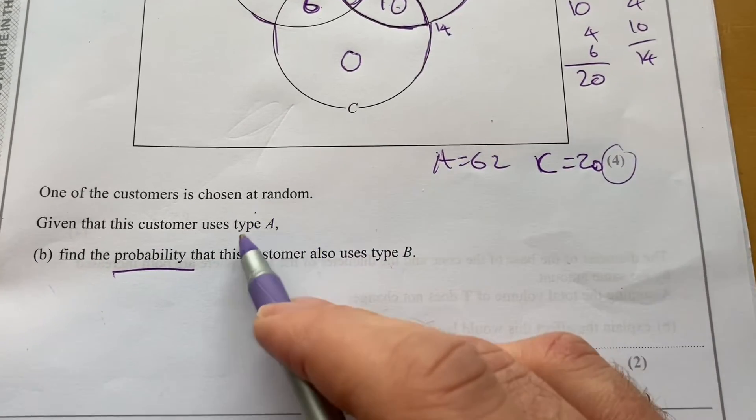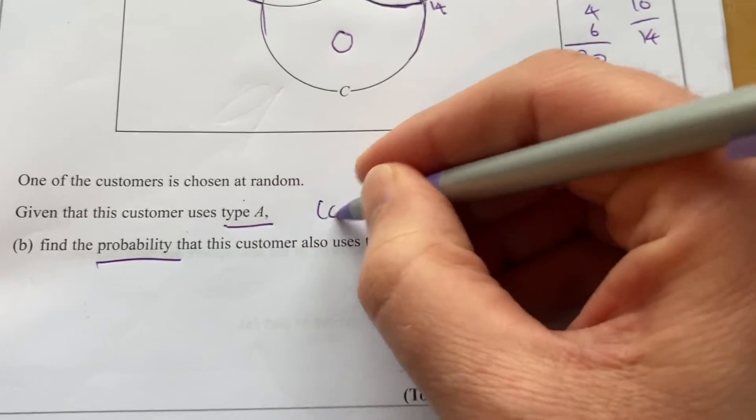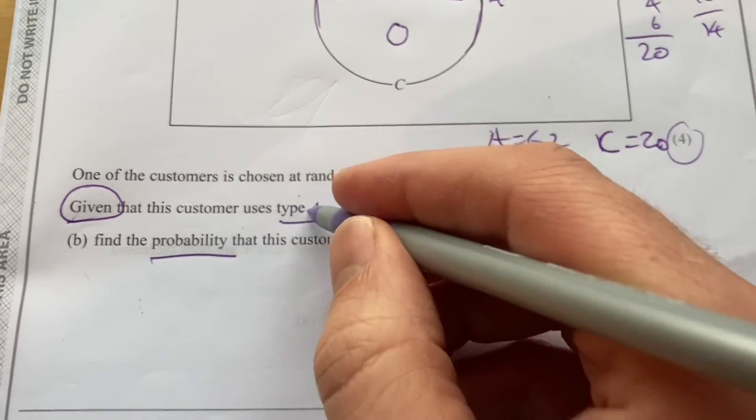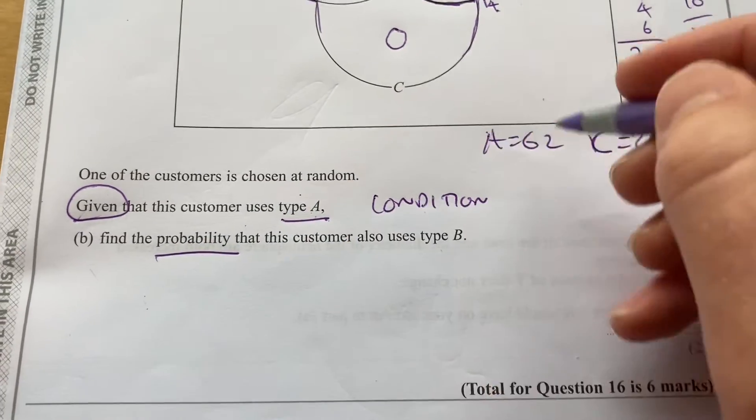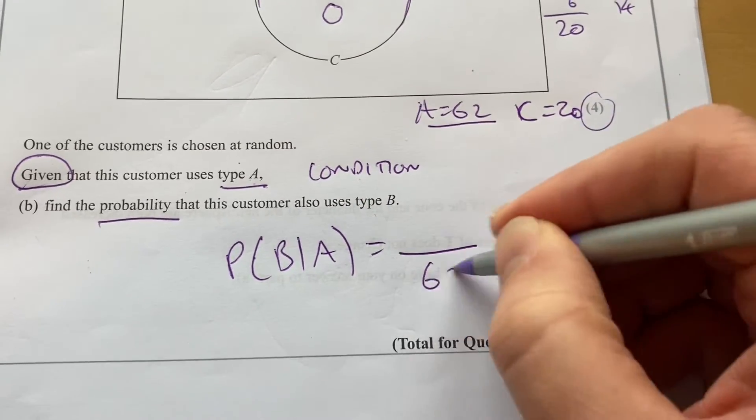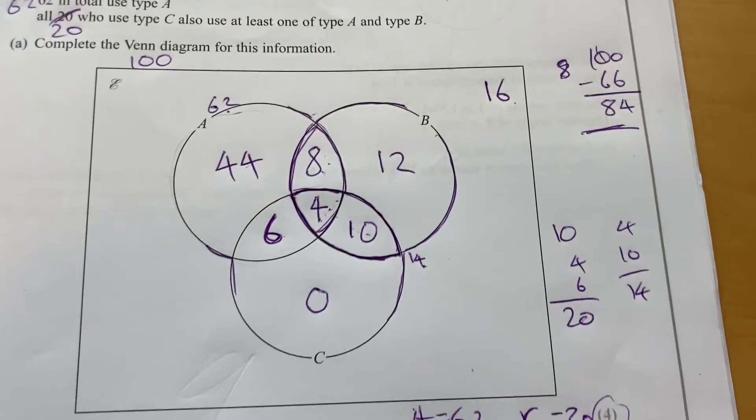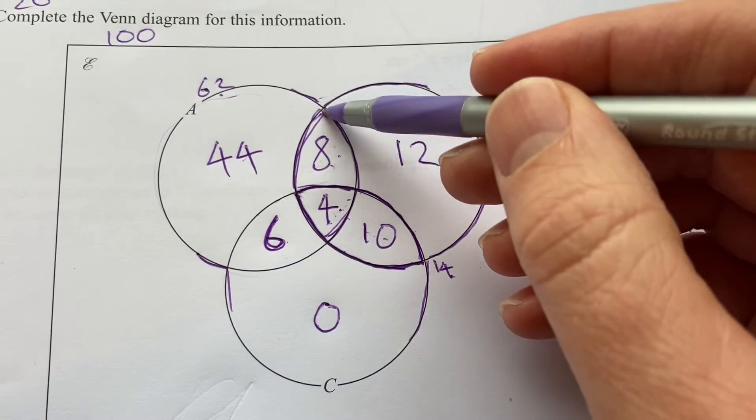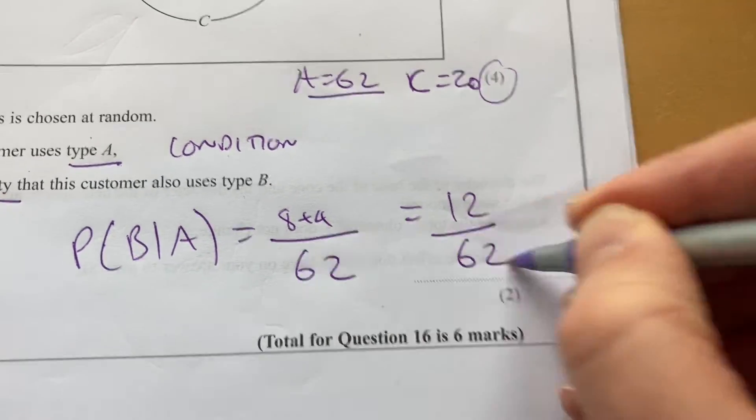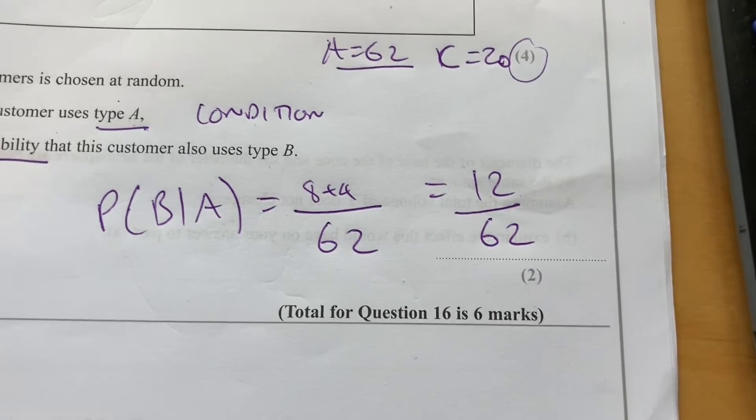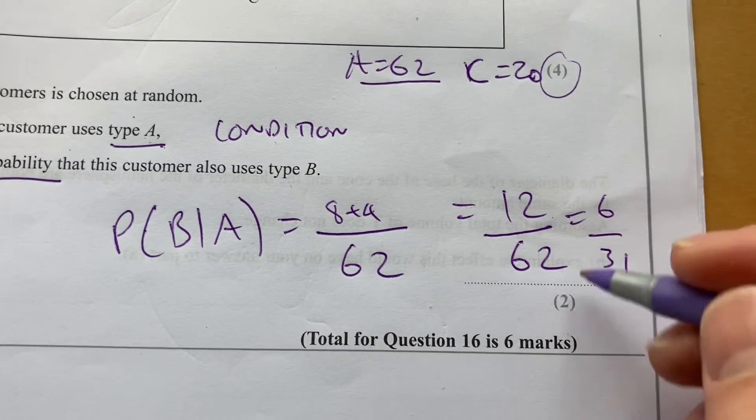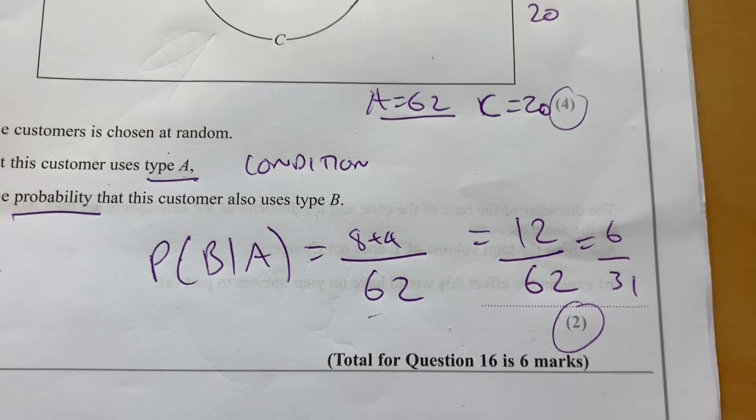They say one of the customers is chosen at random. Given this customer uses type A, find the probability that this customer also uses type B. So our denominator must be out of A, and we know that A is 62. We go and have a look and see how many also use B, and we can see 8 plus 4. So I'd say 8 plus 4, it's 12 over 62. They haven't asked us to put that in simplest form, but if we do that, it would be 6 over 31. And that's just two marks.